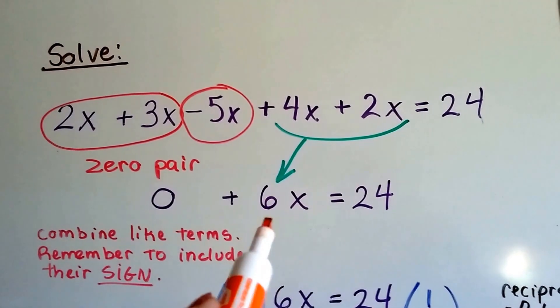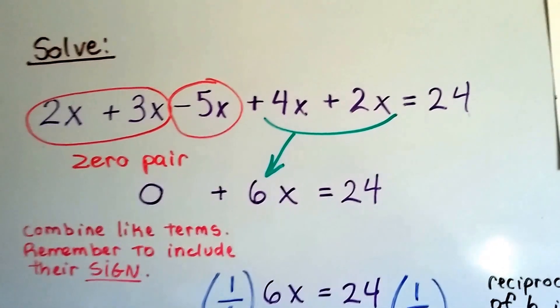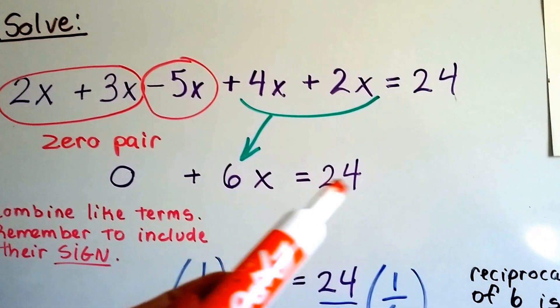Then we've got a 4x plus 2x, that's 6x. So, all we have is 6x equals 24.